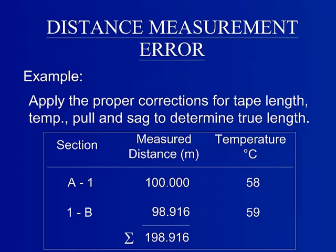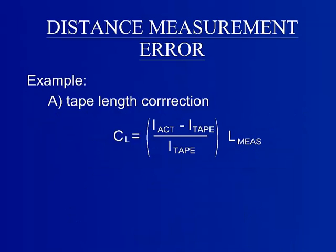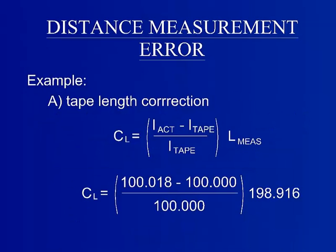For quicker calculation, separate the error calculations into the necessary equations. The first category, part A, is the tape length correction. In this example, the error due to tape length is found to be a positive distance of 0.0358 feet. The distinction of an error being positive or negative is important in error correction. Make sure to keep track of signs.